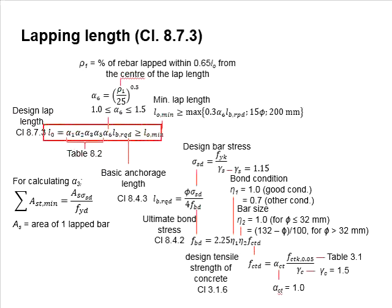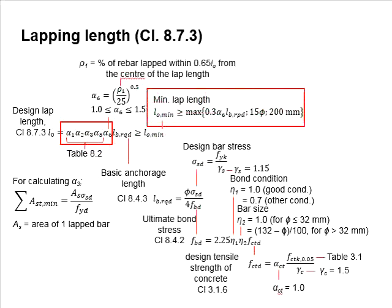The equation here is very identical to the equations used to determine the anchorage length for reinforcing steel embedded in concrete. The main differences are the set of coefficients alpha which represent the conditions of the reinforcement bar and also the minimum lap length.